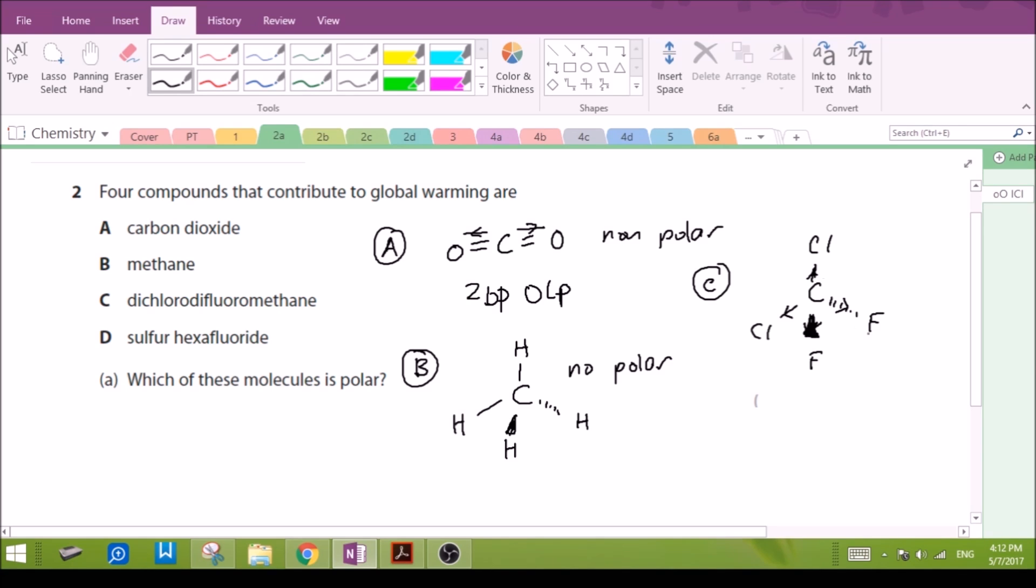Between fluorine and chlorine, fluorine is a much more electronegative atom compared to chlorine, so there will be an overall dipole moment in the direction of fluorine. So the polar bonds don't cancel each other out in this molecule, so C is a polar molecule.